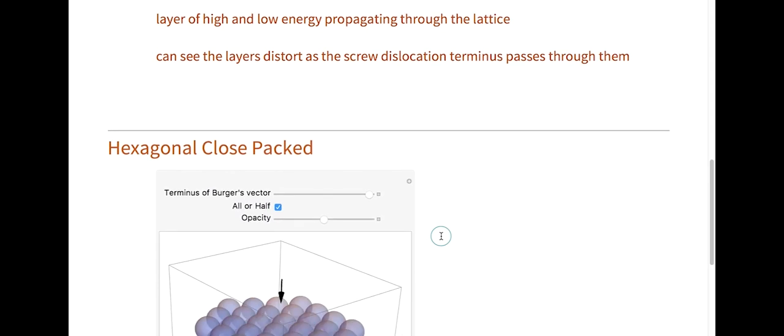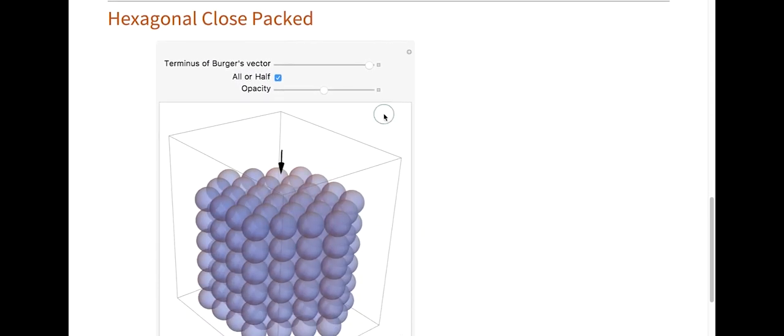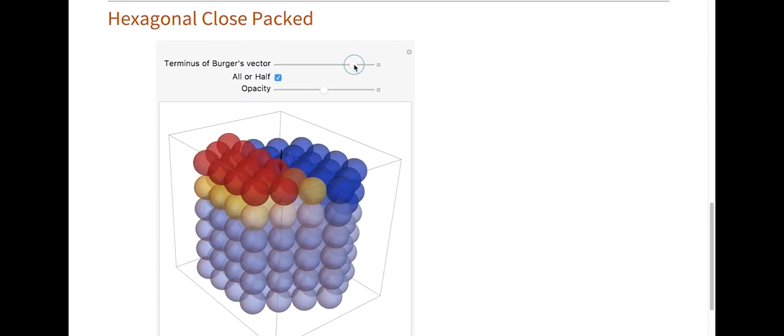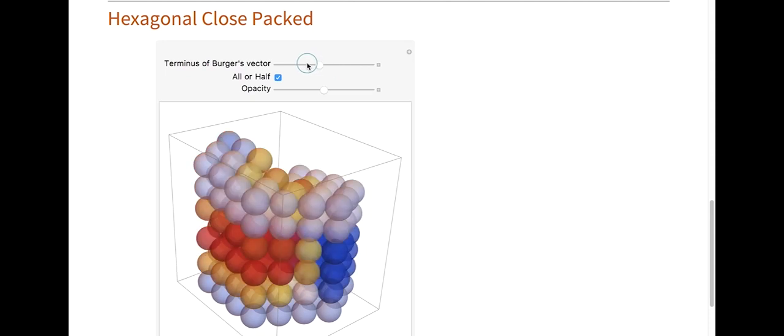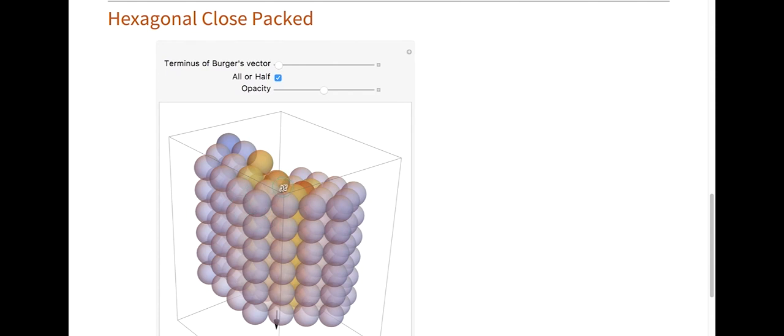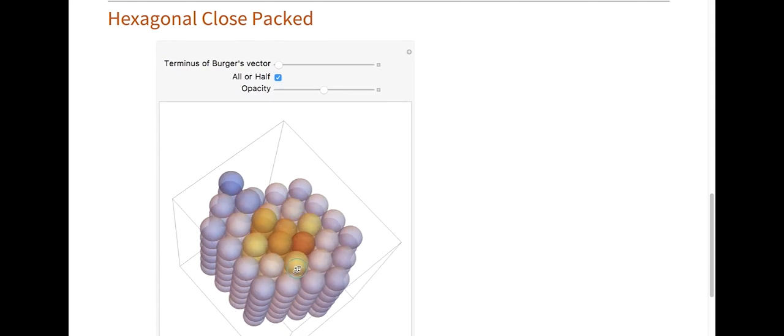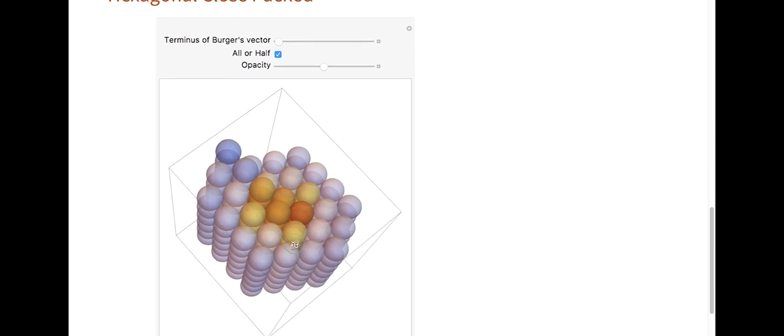In hexagonal close pack, I still do see a really similar thing of this layer of lower and higher energy passing all the way through the lattice. At the end, you have this geometry that we remember before of a screw dislocation. The interesting thing is, you can still see that the energy is higher around the line of the screw dislocation, just like how we saw before.